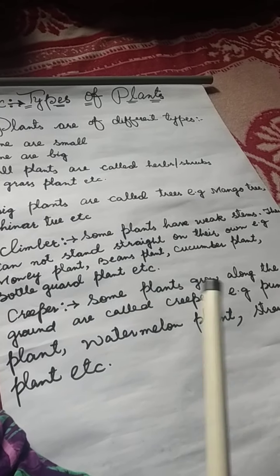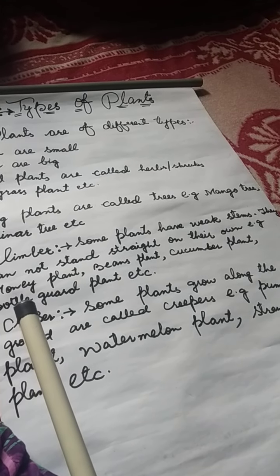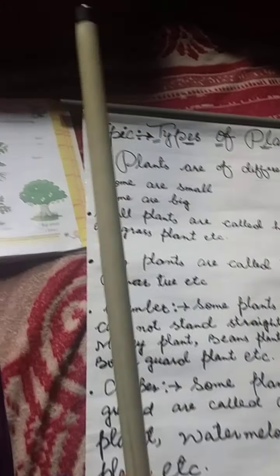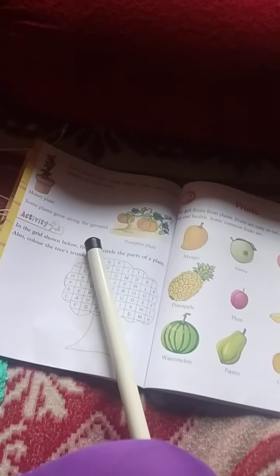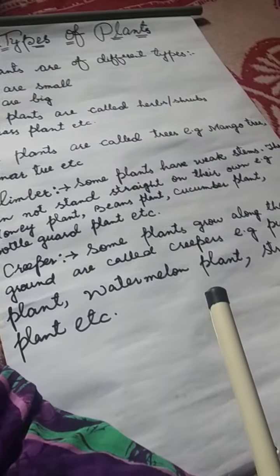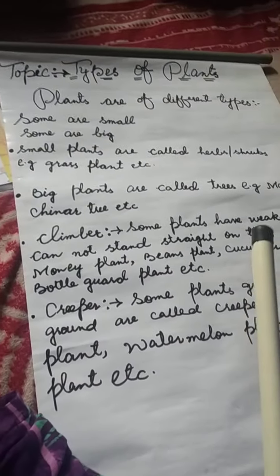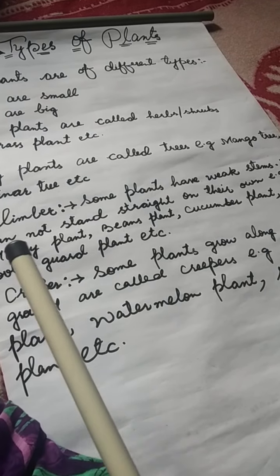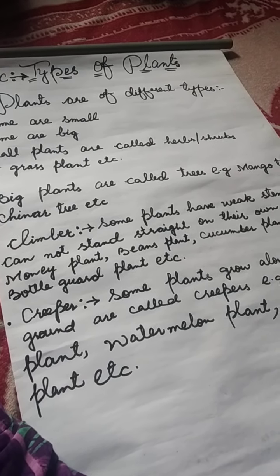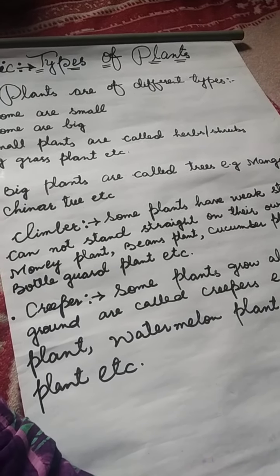Dekhiye, bottle guard aur pumpkin plant mein kya difference hain. Bottle guard woh lambi wali green color ki hoti hai. Aur pumpkin plant jho hain, yeh ground ke oopar ugtate hain. I will show you pumpkin plant — ye hai, ground ke oopar ugtate hain. And the next one is watermelon. Have you seen watermelon? Watermelon bhi zameen ke oopar ugtate hain. I think aapko samaj aa gaya hoga — types of plants, plants ke muktalif kisme hoti hain. Kuch small plants hoti hain, kuch big plants hoti hain.